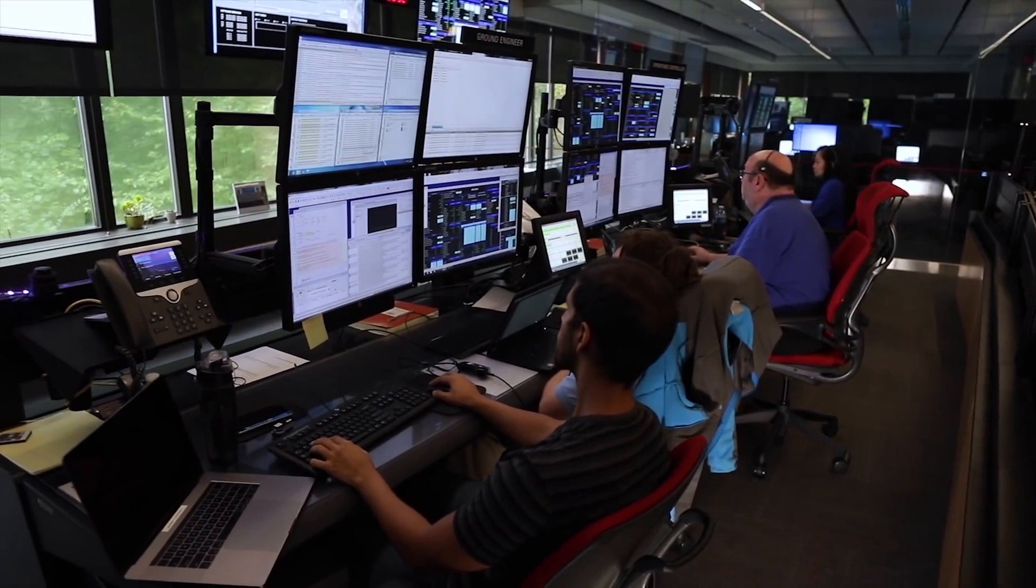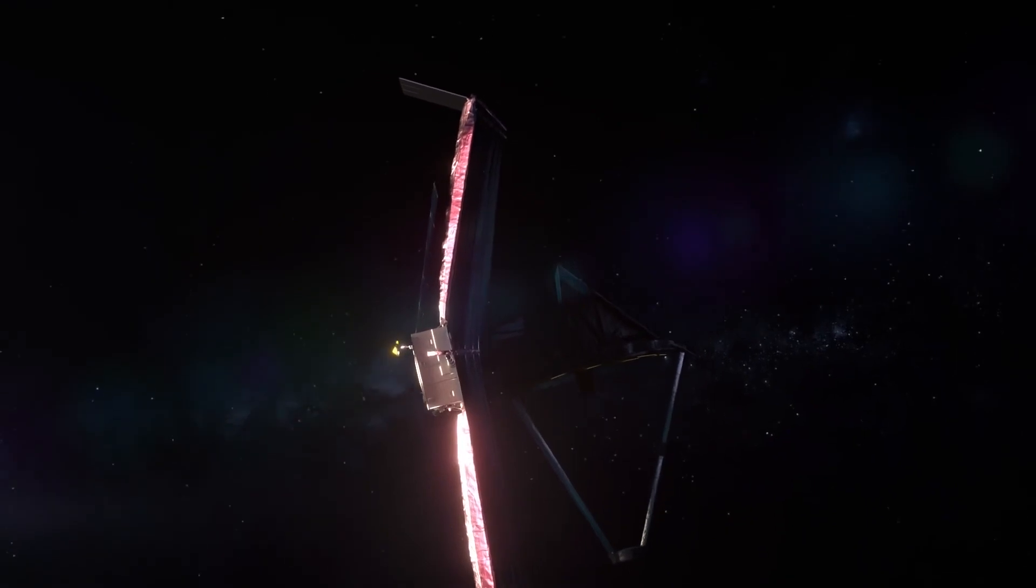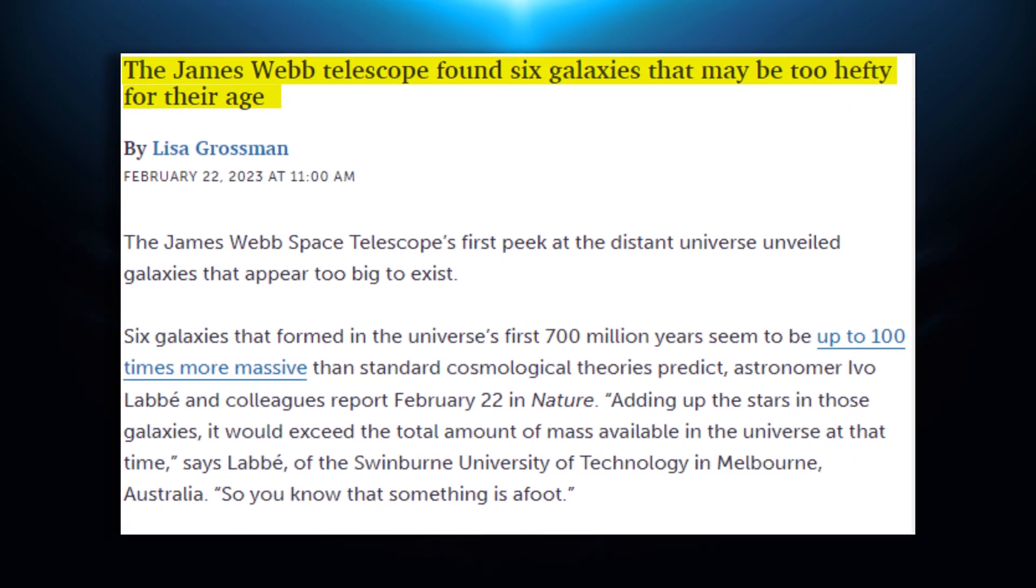NASA has just discovered six giant galaxies that are so ancient, researchers have said that they shouldn't even exist anymore. A team of astrophysicists found the mysterious objects hiding in images taken from the James Webb Space Telescope, which was published in a study on 22nd of February.